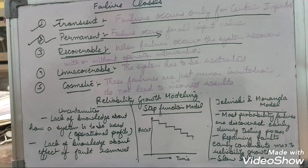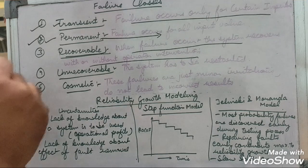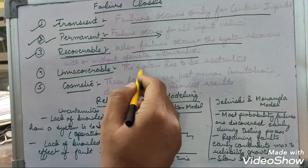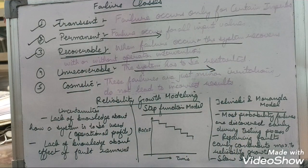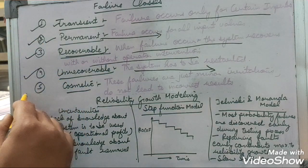With recoverable errors, if a failure occurs and the system is able to recover without or with the help of an operator, it is called a recoverable error. Then we have unrecoverable errors — these are errors from which we have to restart the system to recover. This is called unrecoverable errors.